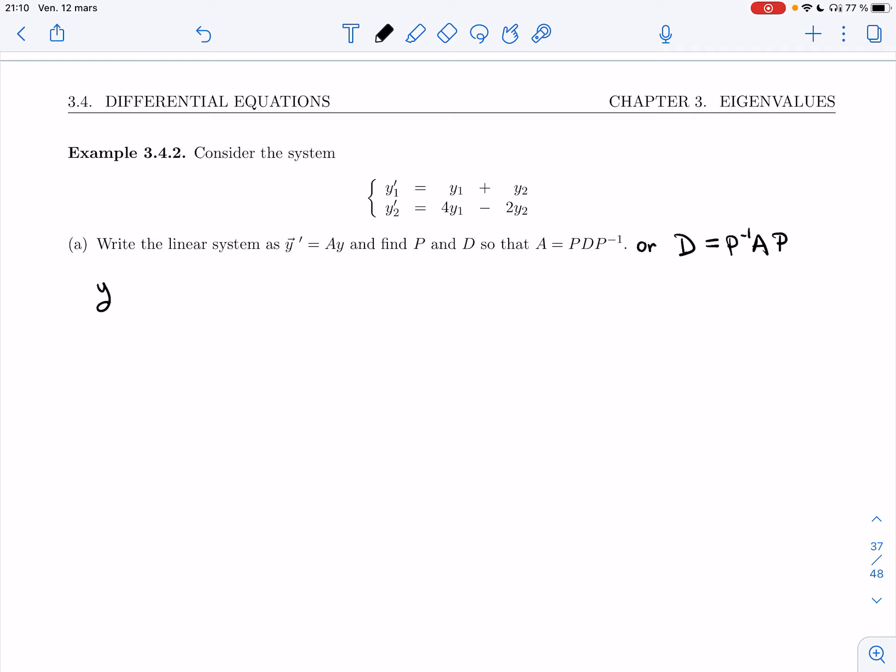So I have y equals y1 y2, and so y prime is y1 prime y2 prime, and that's 1y1 plus y2, 4y1 minus 2y2, and now I can split it as a product of matrices. And so I have 1, 1, and then 4, minus 2, and so my matrix A is 1, 1, 4, minus 2.